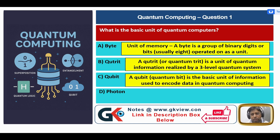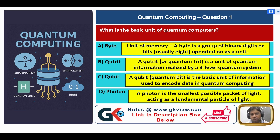A Qubit is a basic unit of information used to encode data in quantum computing. The difference between Qubit and Qubit is that one has 3 possible states whereas the other has only 2 possible states. A photon is the smallest possible packet of light, acting as a fundamental particle of light. So, the answer is C — Qubit.